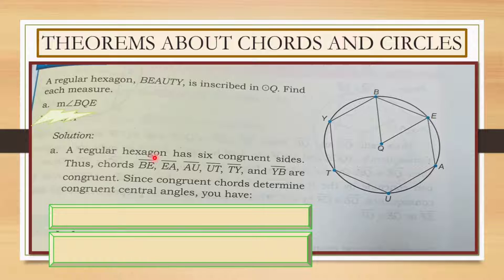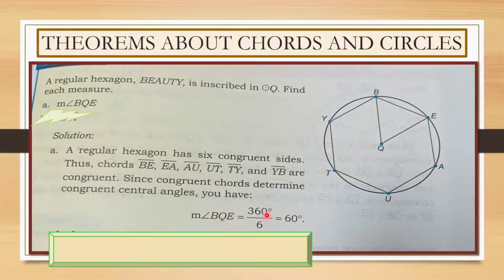Let us find the measure of angle BQE. So where is angle BQE? This is B-Q-E. The chords BE, EA, AU, UT, TY, and YB are all congruent. Since congruent chords determine congruent central angles, we have the measure of angle BQE. 360 divided by 6. Why 360 degrees? Because the measure of a whole circle is 360 degrees. Divided by 6 because we have a regular hexagon with six congruent sides. Therefore, we have 60 degrees.